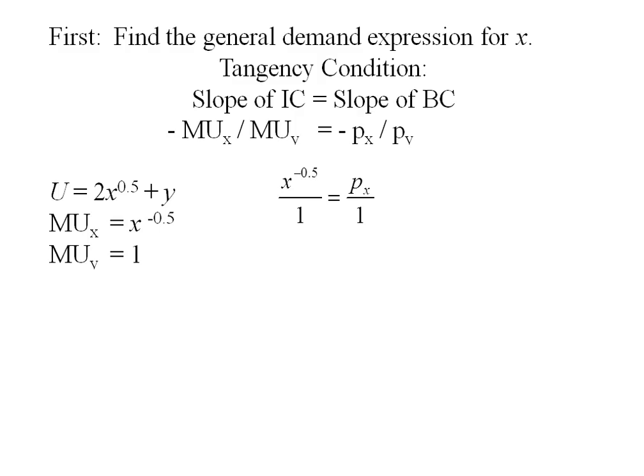So the left hand side is x to the negative 0.5 over 1 and the right hand side is px over 1 because y costs a dollar. I'm going to rearrange this and solve for x and there'll be a little bit of manipulation.